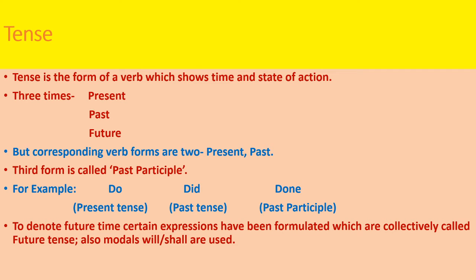Now, as you know, there are three types of times: present time, past time, and future time. So the word corresponding to these times becomes the tense. For example, the verb which refers to present time will be called present tense, and the verb referring to the past time is called the past tense. But you should know that there are only two verb forms corresponding to time — that is present tense and past tense.